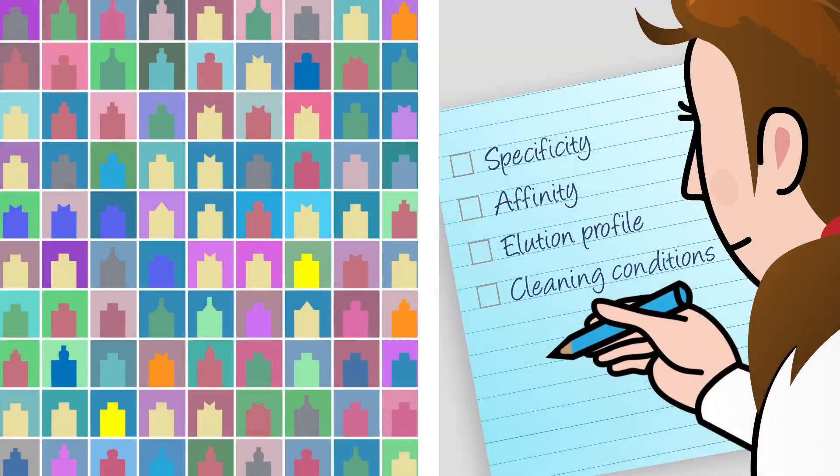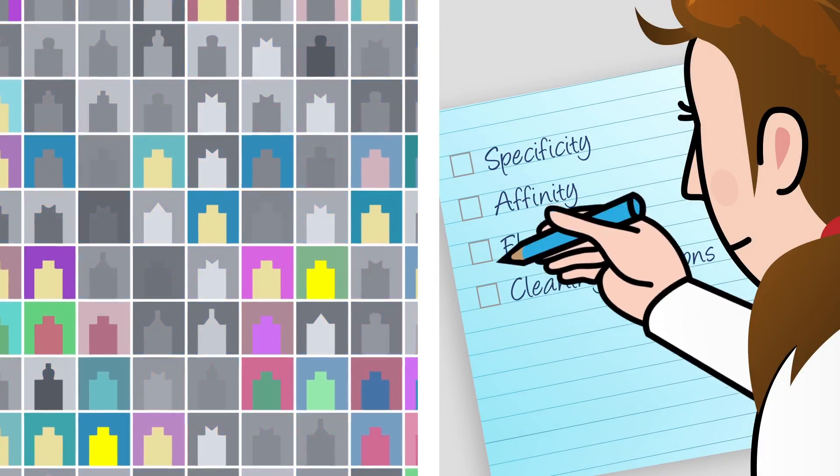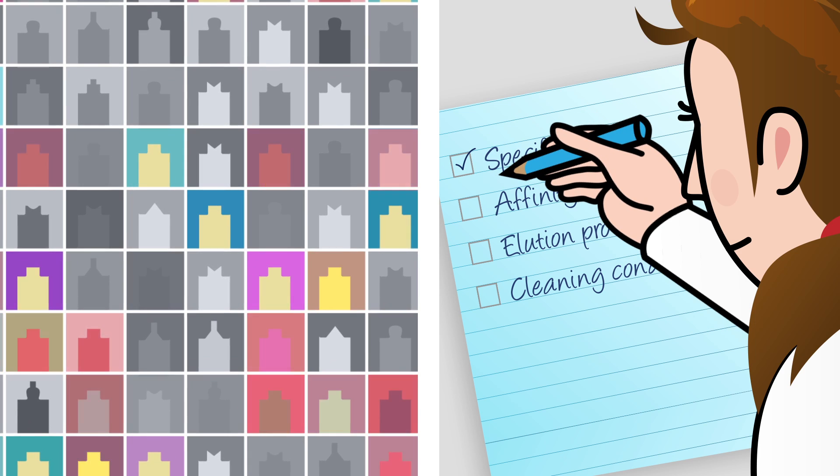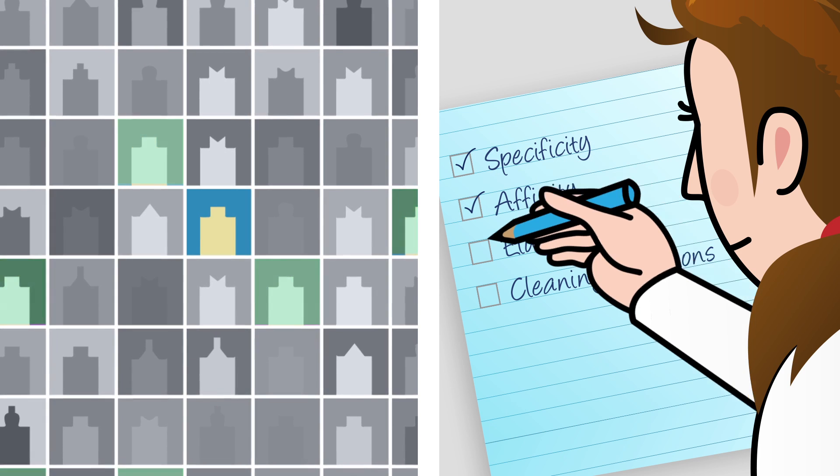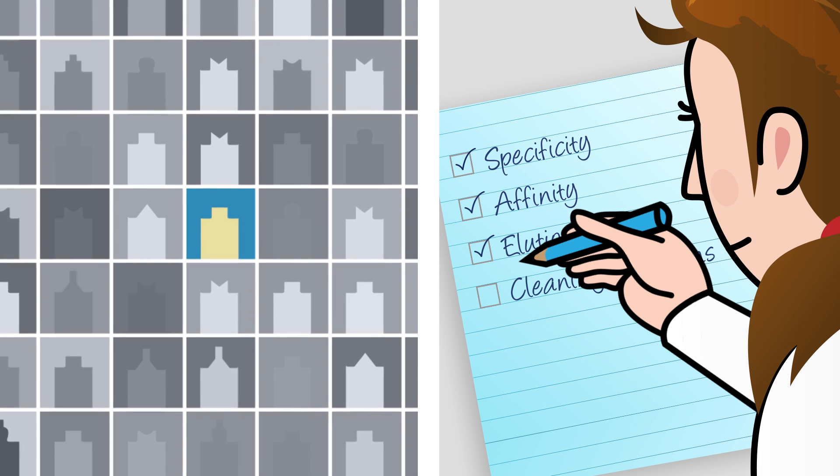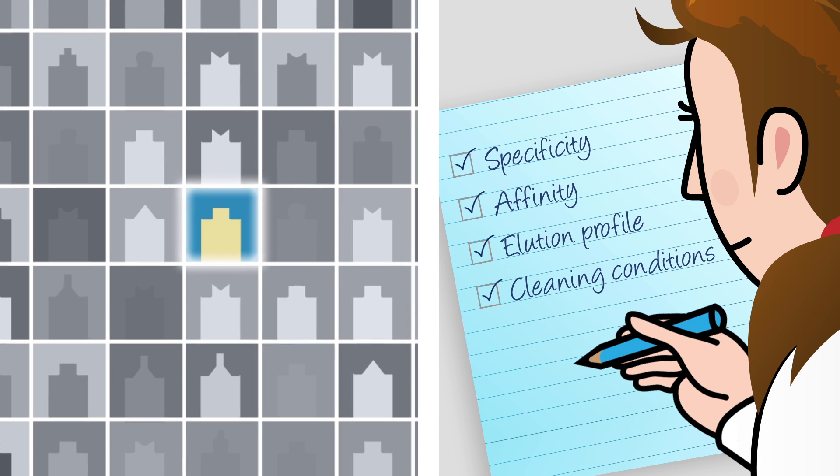Ligands for a specific target molecule are identified from expression libraries, providing an opportunity to select VHH molecules tailored for specificity, affinity, elution profile, and cleaning conditions.